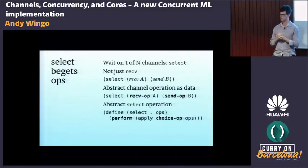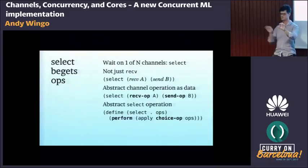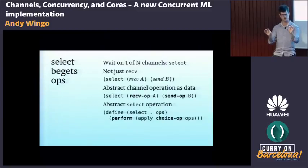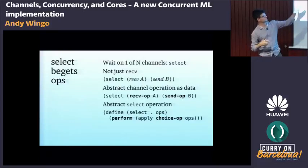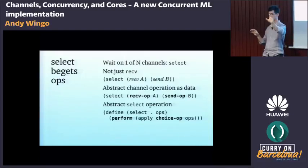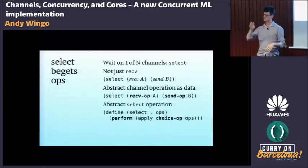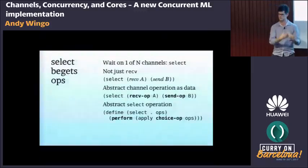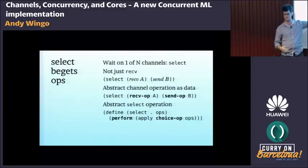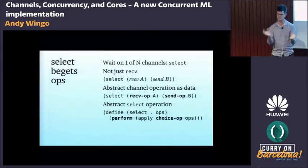Implementing select is tricky. You want to select not only on receiving from two channels but also perhaps send on one or receive on another. So the arguments to select are no longer just channels — they're a channel plus an annotation of intent: receive on channel A, receive on channel B. We need an abstraction to tag these values with the intent, and then select can perform that joint operation. But you also need to know which case fired, so you need the ability to annotate continuations.